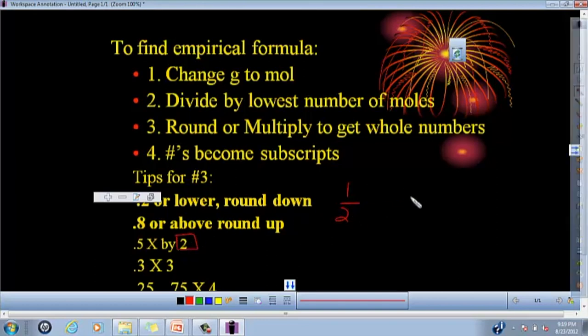The decimal .3, that is the common fraction one third, so you will multiply by three, the denominator, to get rid of it. Now, if you have .25 or .75, those are the common fractions one fourth and three fourths, and so you again multiply by the denominator to get rid of that. Now, I know this is all hogwash right now, but it will make sense in a minute.